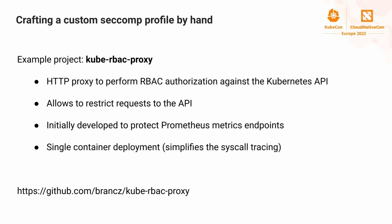The example project we're using today is kube-rbac-proxy, which is basically an HTTP proxy that can perform RBAC authorization against the Kubernetes API. This allows restricting requests to the API in network-isolated environments, and it was developed initially to protect Prometheus metrics endpoints, adding an additional security layer to usually plainly exposed Prometheus metrics. It's a single-container deployment, which simplifies the syscall tracing considerably.